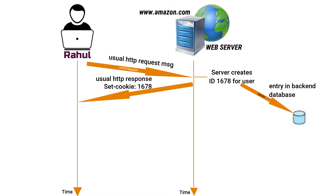The Amazon web server then responds to Rahul's browser, including in the HTTP response a Set-Cookie header containing the identification number 1678. The header line is: Set-Cookie: 1678.